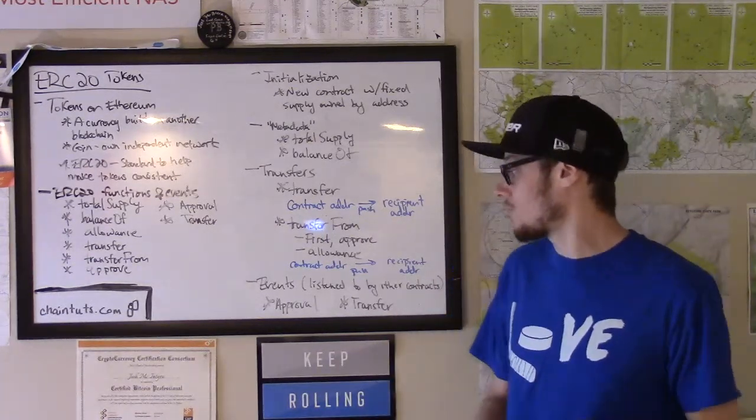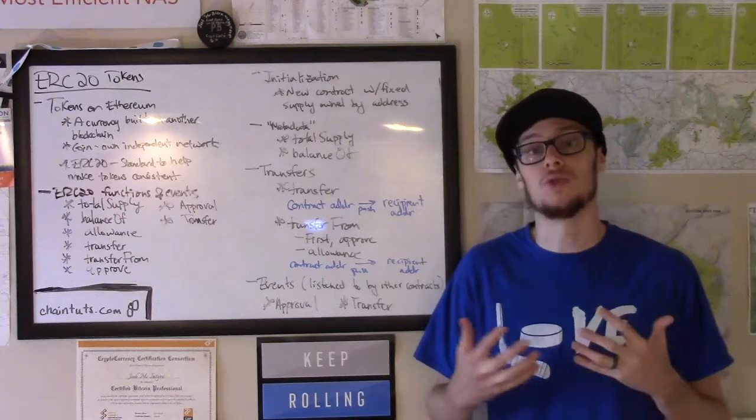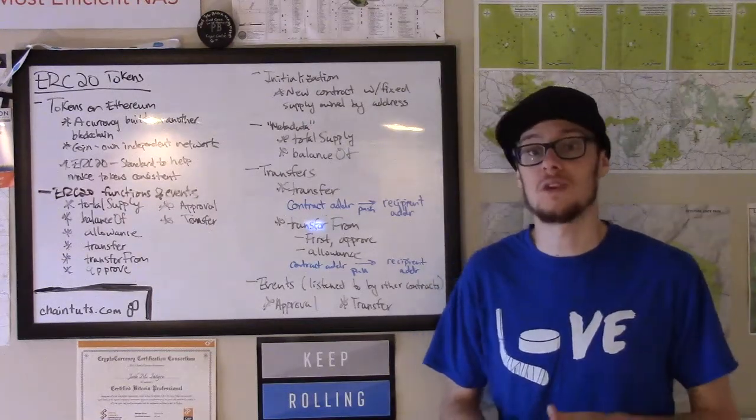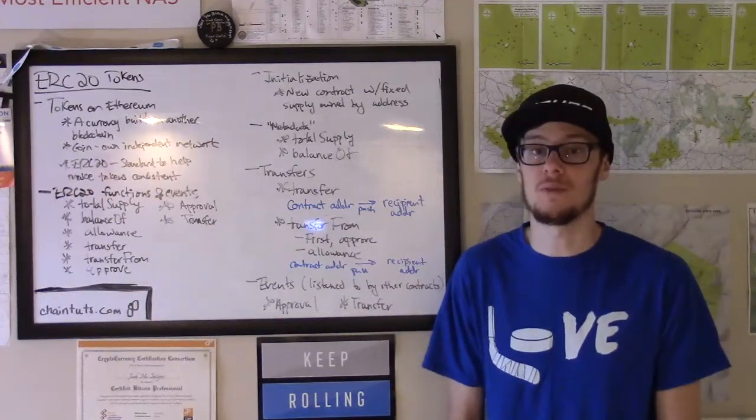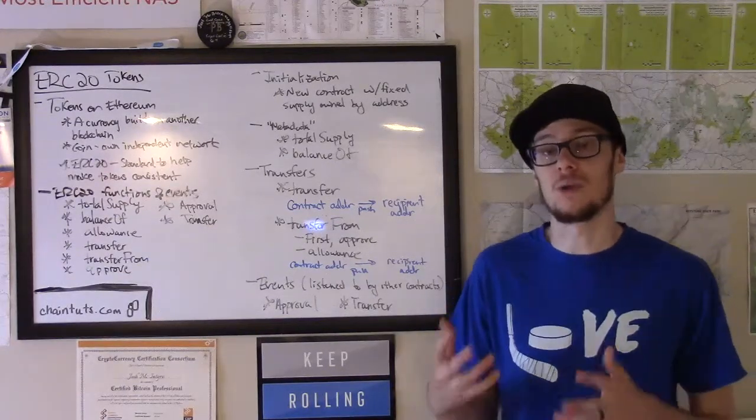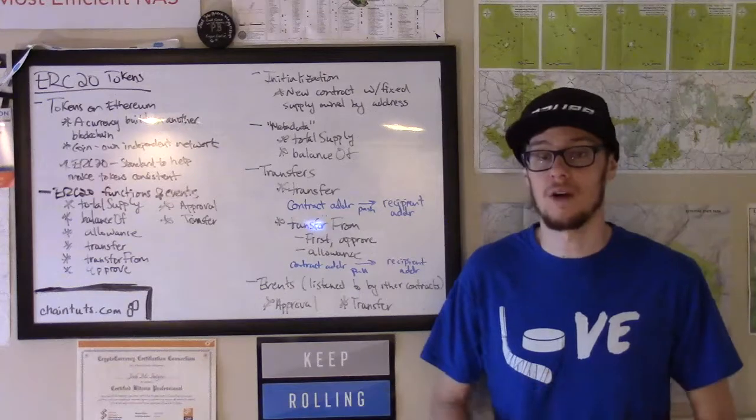And so if there's another contract out there that, for example, wants to initiate a withdrawal once it receives approval, that contract can listen for the approval event to be emitted by the original token contract on the Ethereum network.